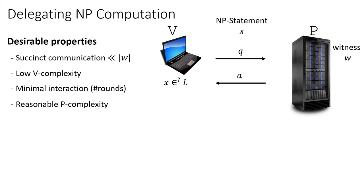So what we want is a proof system, which of course needs to have completeness and soundness, but also should have succinct communication. The communication should be much lower than the length of the witness W, and also the complexity of the verifier should be much lower than the complexity of actually running the NP verification on the actual witness. Given these requirements, we can hope to send a message from the prover to the verifier.